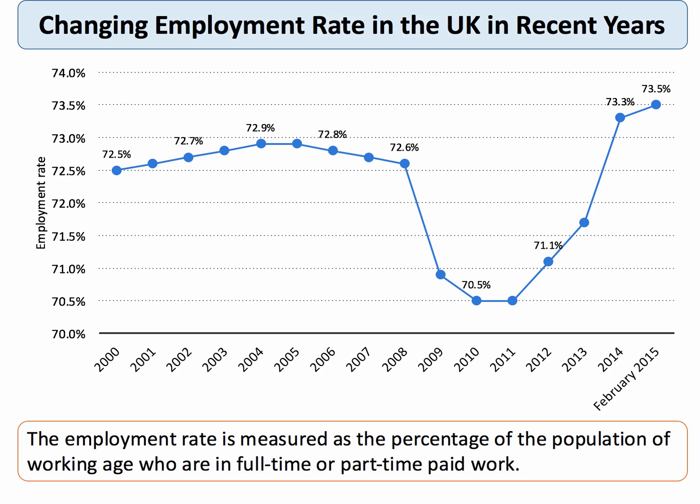The employment rate is the percentage of the working-age population who are either in a full-time or part-time job. The employment rate fell during the recession and has risen quite sharply since, to 73% and climbing. If you want to disaggregate this further, you'd be thinking about what types of jobs people are taking — what's the balance between part-time and full-time, and between permanent contracted work and jobs which offer only zero-hours contracts.